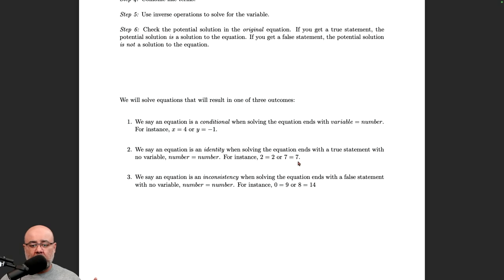Then the original equation is called an identity, because it was this relationship the entire time, it was just hiding in plain sight. So this type of true statement would result in the original equation being called an identity.